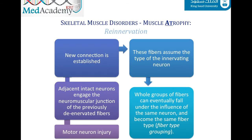To clarify: when a motor neuron is injured, adjacent intact neurons engage the neuromuscular junctions of the previously de-innervated fibers and a new connection is established. These fibers then assume the type of the innervating neuron — if the neuron innervates type 2 fibers, they become type 2; if type 1, they become type 1. Eventually the whole group of fibers falls under the influence of the same neuron and becomes the same fiber type.